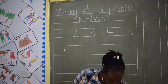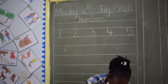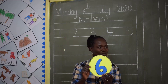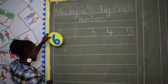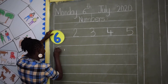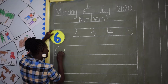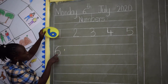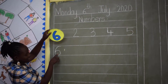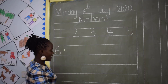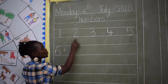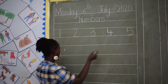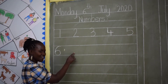Let me look for number 6. Here is number 6 like a spoon. Now let me write number 6 — number 6 like a spoon. This is number 6. Let's count again: 1, 2, 3, 4, 5, 6, 7.